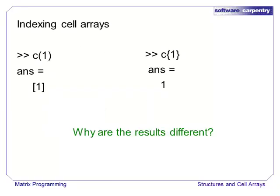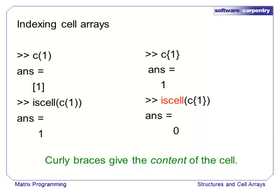Cell arrays follow the same indexing rules as arrays, but they can be indexed using either parentheses or curly braces. The difference is that using parentheses returns a cell array with a single element, while the curly braces returns the element in the first slot of the array. This might seem confusing, and it is.